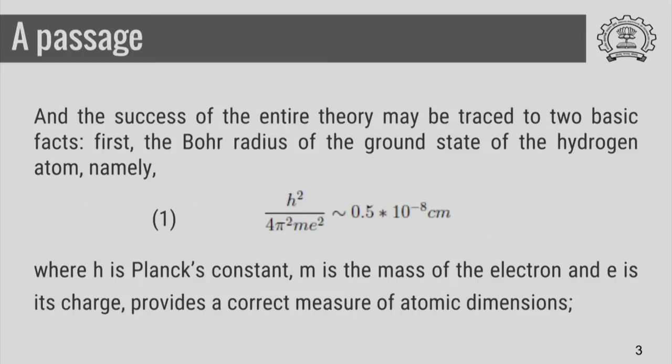And the success of the entire theory may be traced to two basic facts. First, the Bohr radius of the ground state of the hydrogen atom, namely H squared by 4 pi squared M e squared is of the order of 0.5 Angstroms, where H is Planck's constant, M is the mass of the electron, and E is its charge, provides a correct measure of atomic dimensions.